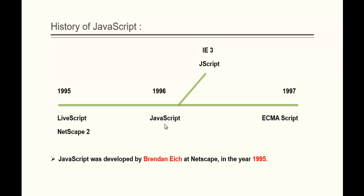They did this just to market the scripting language. But most programmers say this was a bad idea because it led to confusion about whether JavaScript is related to Java or not. JavaScript is in no way related to Java. As JavaScript became popular, Microsoft built their own version of JavaScript for Internet Explorer version 3, and they called it JScript.